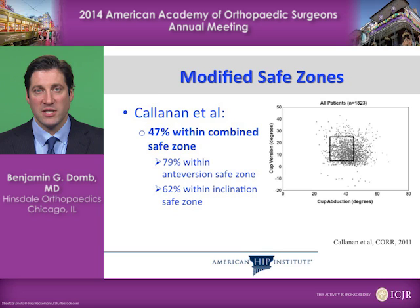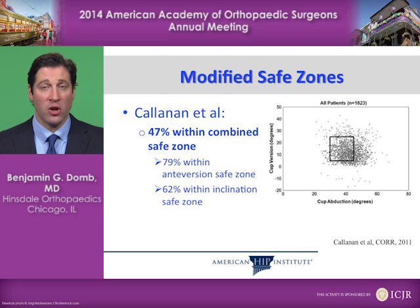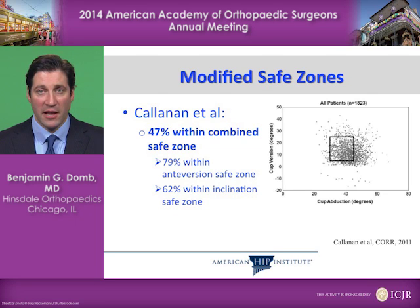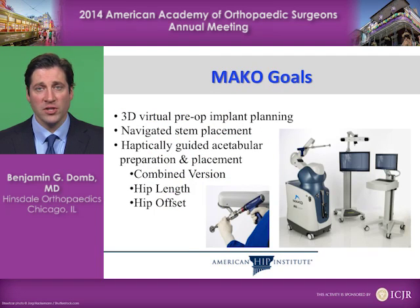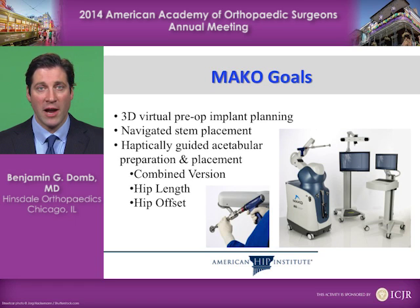79% were in the safe zone for anteversion and 62% for inclination, but in combination only 47% fell within the safe zone. The goals of using robotics are to make this better — to be more precise and more accurate.